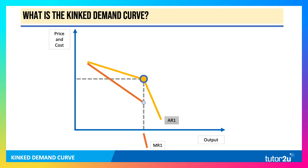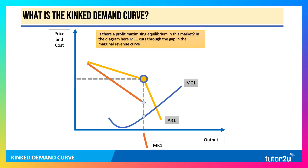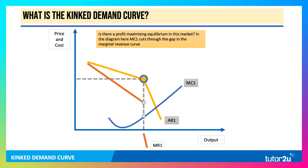The AR curve shows a change in elasticity at the kink, and you can derive the marginal revenue, which lies below AR, from that diagram. There's a gap or discontinuity in the MR curve at the kink. The question is: is that a profit-maximising equilibrium? In this diagram, MC1 cuts through the gap in the marginal revenue curve, so that price and quantity may well be a profit-maximising equilibrium.